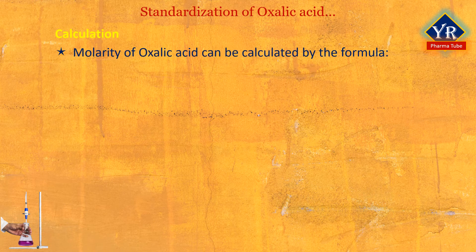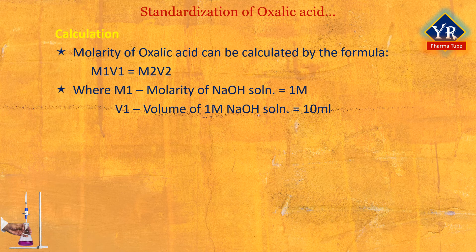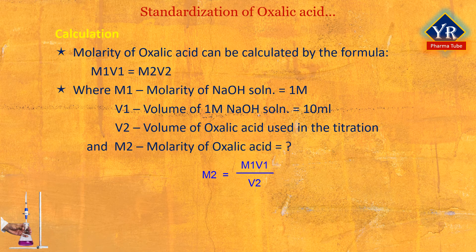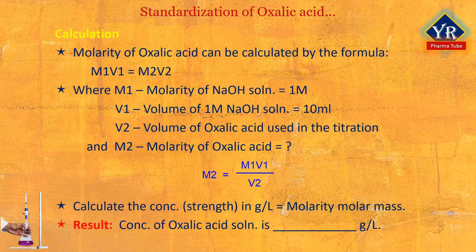Molarity of the oxalic acid solution can be calculated by using the formula M1V1 = M2V2, where M1 is the molarity of the sodium hydroxide solution that is 1 molar, V1 is the volume of the 1 molar sodium hydroxide solution that is 10 ml, V2 is the volume of the oxalic acid used in the titration, and M2 is the molarity of oxalic acid that can be calculated. Therefore, M2 = M1V1 / V2. Calculate the concentration of oxalic acid solution in grams per liter using the equation: concentration (strength in grams per liter) = molarity multiplied by molar mass.